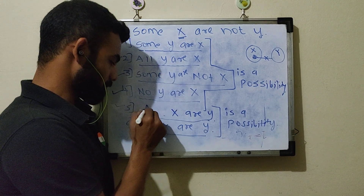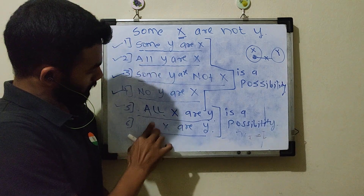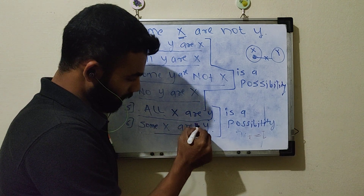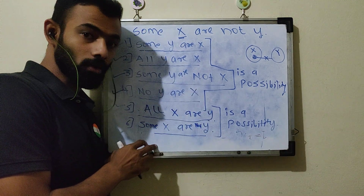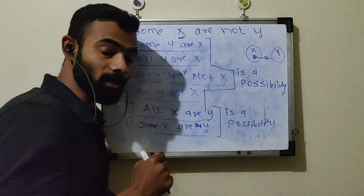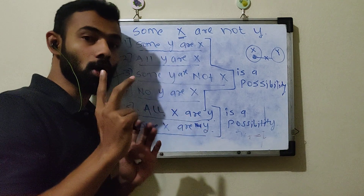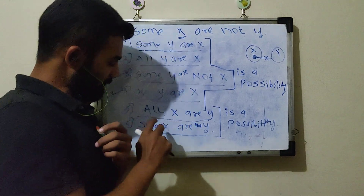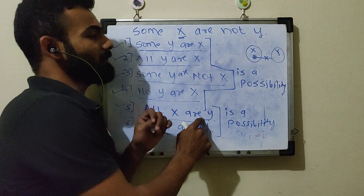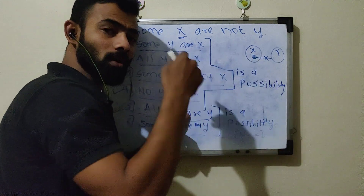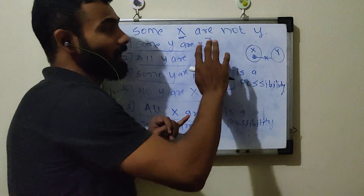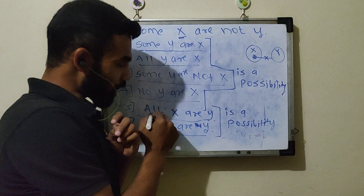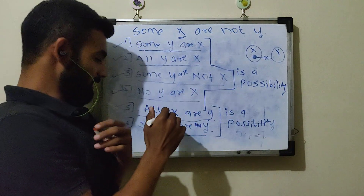इसको मैंने All कर दिया और इसको Some not कर दिया — 'Some X are not Y.' तो अगर मैंने ये दो changes किये, तो कुछ students के mind में question होगा कि sir अभी ये correct है? Make sure कि ये possibility में भी wrong है। जैसे 'All X are Y' — उन्होंने starting में बोला है कि कुछ जो X है वो Y नहीं है, तो All X कैसे Y हो सकते? So whether you write 'All X are Y' normally or apply possibility, it is still wrong.